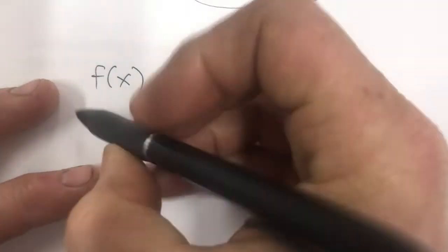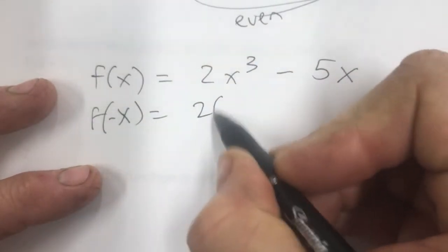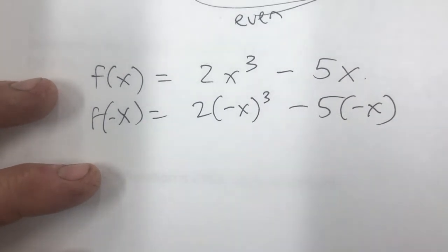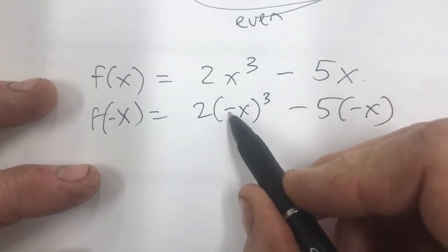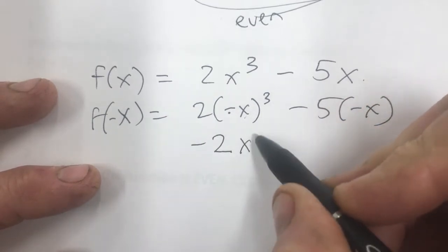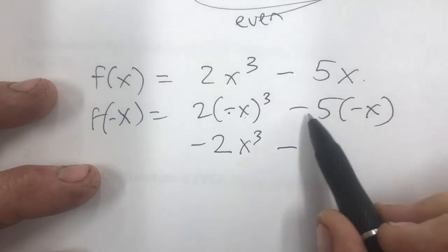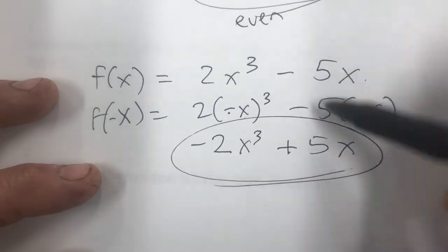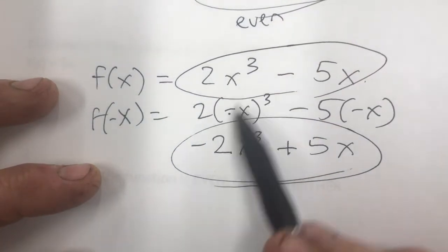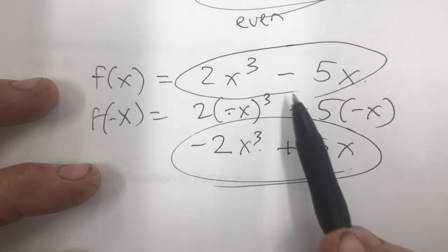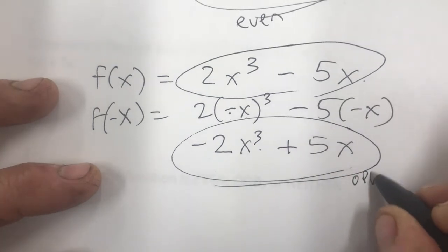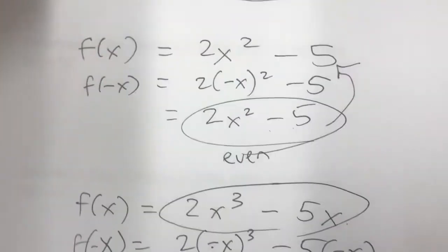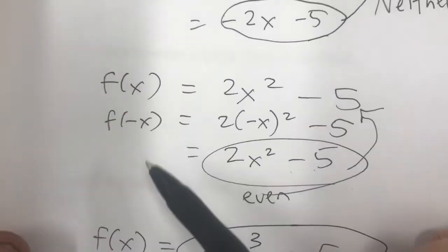Now this one — is it odd, even, or neither? I put negative x in for x: I get 2(-x)³ - 5(-x). Negative 1 to the third power is negative 1, so I get negative 2x³, and negative 5 times negative x gives positive 5x. That's the exact opposite of the original function — instead of 2x³ I have -2x³, and instead of -5x I have +5x — so this is an odd function.